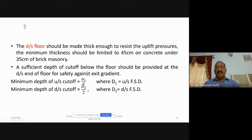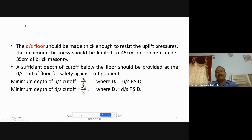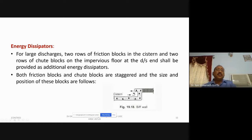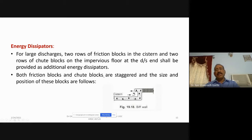A sufficient depth of cutoff below the floor should be provided — usually the upstream cutoff depth is D1/3, where D1 is the upstream full supply depth, and the minimum downstream cutoff is D2/2, where D2 is the downstream full supply depth. Good energy dissipation arrangements should also be provided using baffle walls. For large discharges, two rows of friction blocks in the cistern and two rows of chute blocks on the impervious floor at the downstream end shall be provided as additional energy dissipating arrangements.